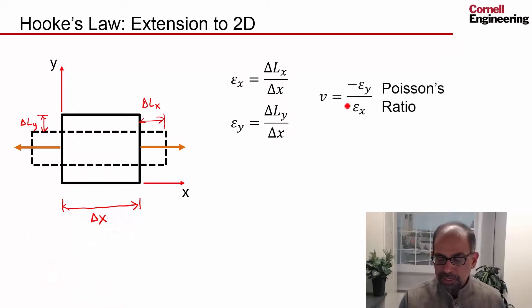And it's been observed that if I have a normal stress like this, the strain it creates in the Y direction is some fraction of the strain it creates in the X direction. And that fraction is given by Poisson's ratio.